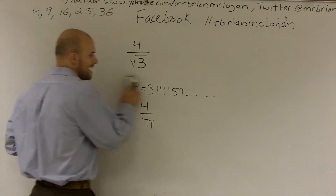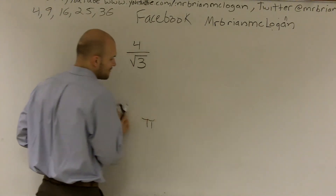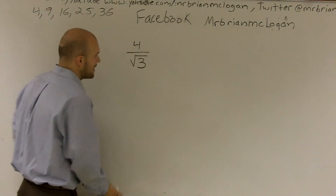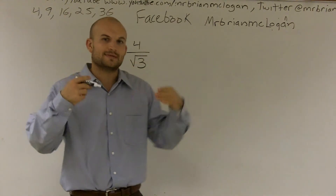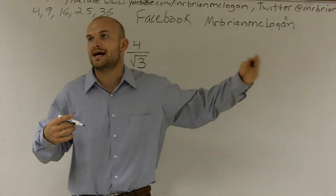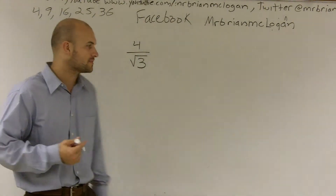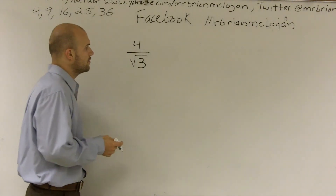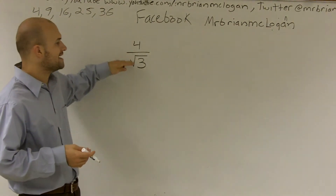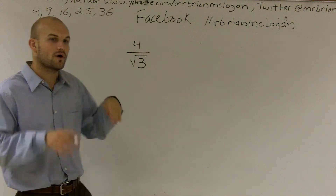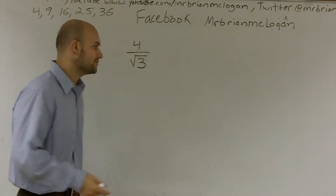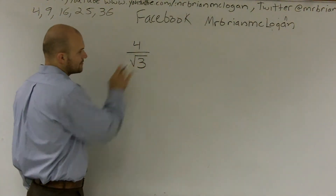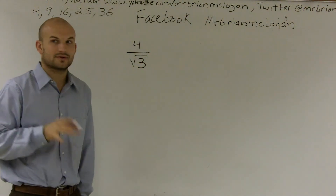So we have a little bit of difficulty simplifying this. However, when you have a radical, a radical has the same properties. The square root of 3 keeps on going on and on forever, so it's impossible to divide this into our 4. However, what we can do is get rid of this radical.